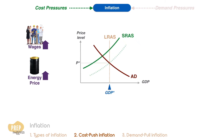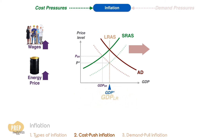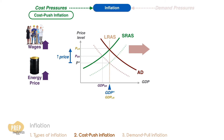At the new short-run equilibrium, output is lower but price is higher. If the central bank opts to stimulate aggregate demand so output returns to its long-run potential, the result would be a further increase in the price level. This is known as cost-push inflation because it's brought about by an increase in costs of production to the producers.